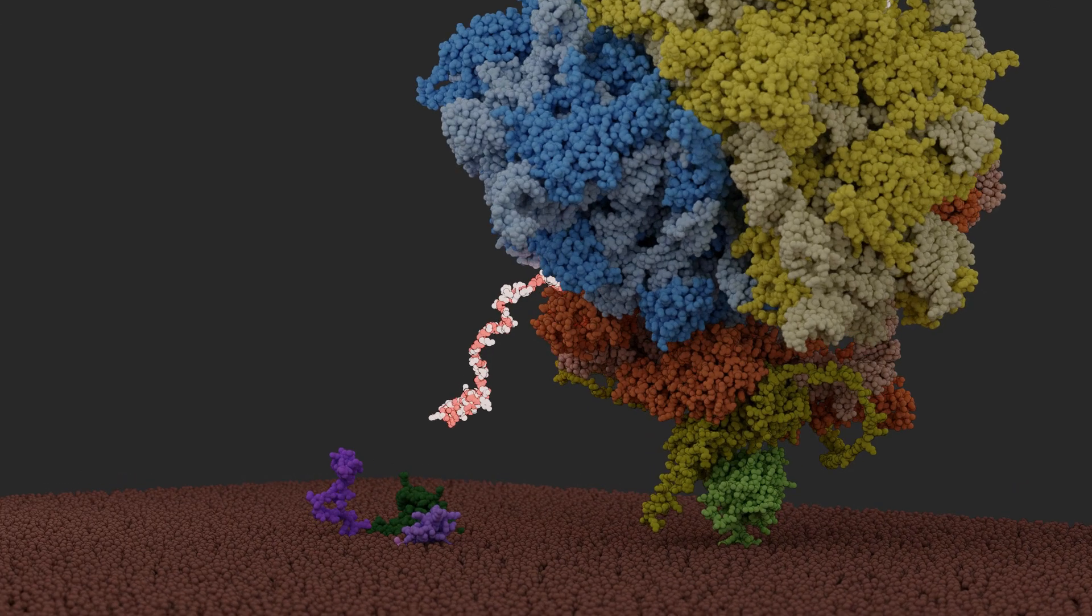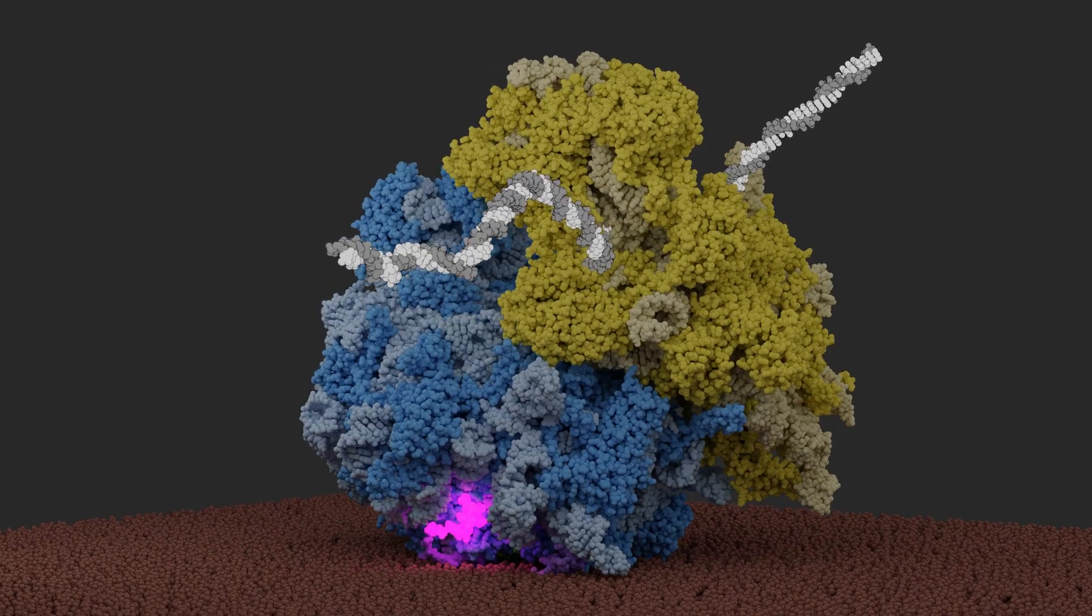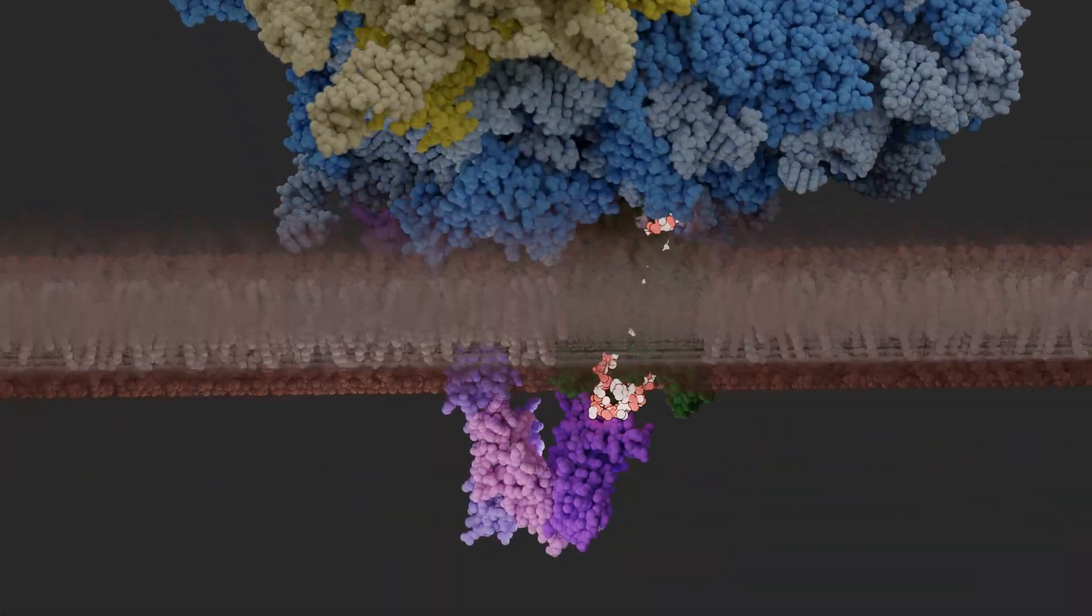As a consequence of membrane targeting, the hydrophobic nascent chain is handed over to the Sec 61 translocon, which allows insertion of membrane proteins into the ER.